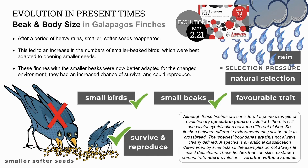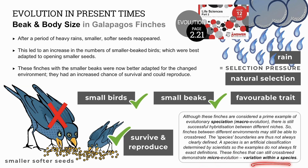Darwin's finches are often used as examples of speciation or macroevolution, but there is often crossbreeding between some of these finches on the islands, so species boundaries are not always clearly defined. This also demonstrates microevolution, or variation within a species.